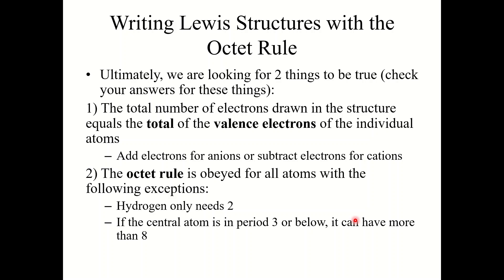But it will not always be this easy. Ultimately we are looking for two things to be true. First, the total number of electrons drawn in the structure equals the total number of valence electrons of the individual atoms — add electrons for anions and subtract electrons for cations. Second, the octet rule needs to be obeyed for all atoms with the following exceptions: hydrogen only needs two; there are two more exceptions with less than eight; and there is an exception called hypervalency, where the central atom in period three or below can have more than eight.